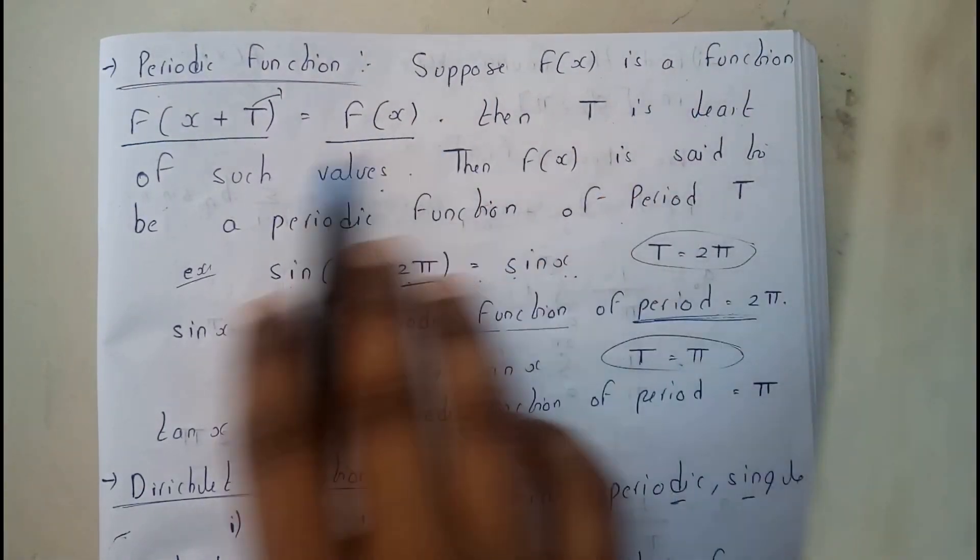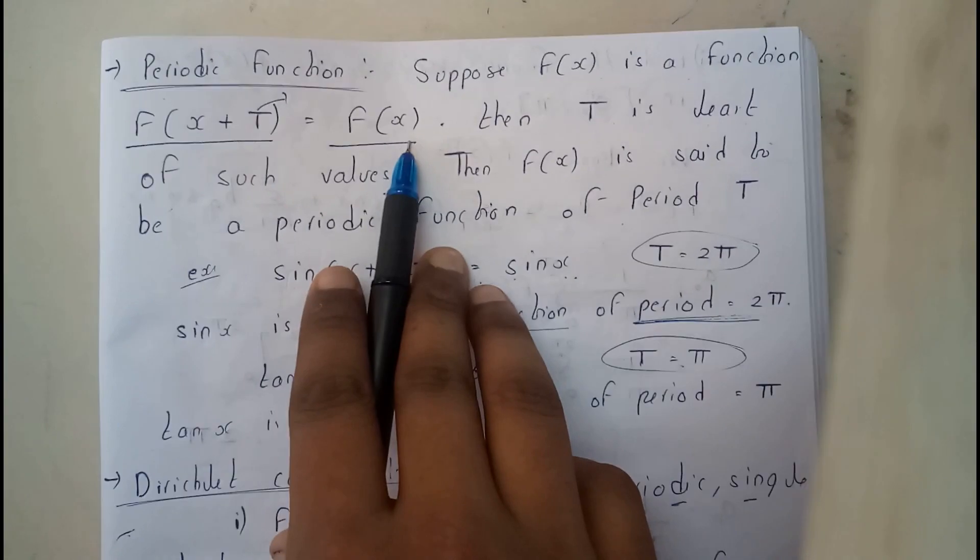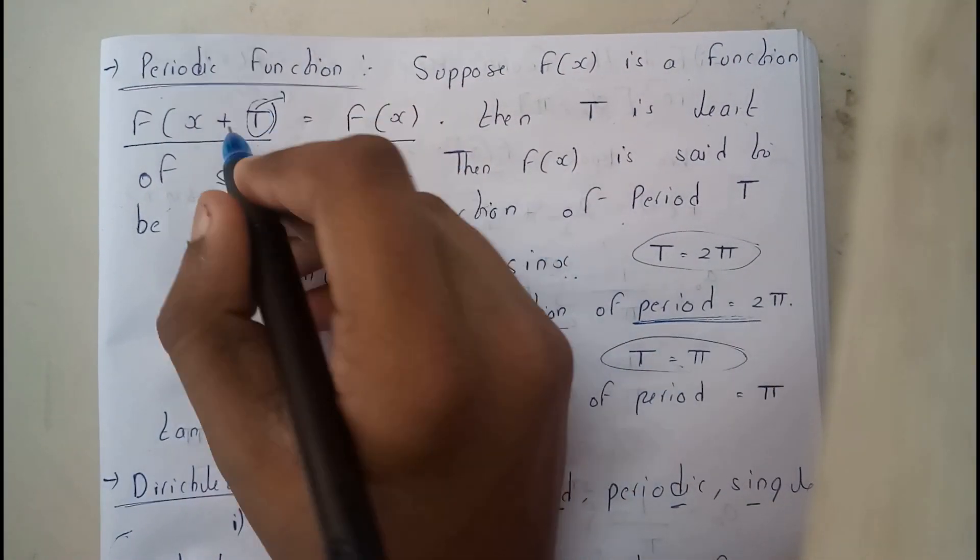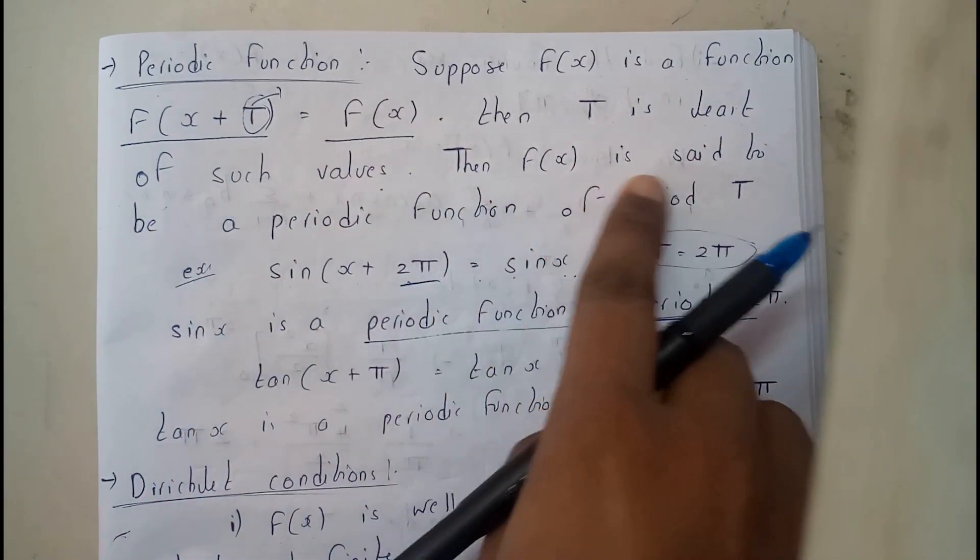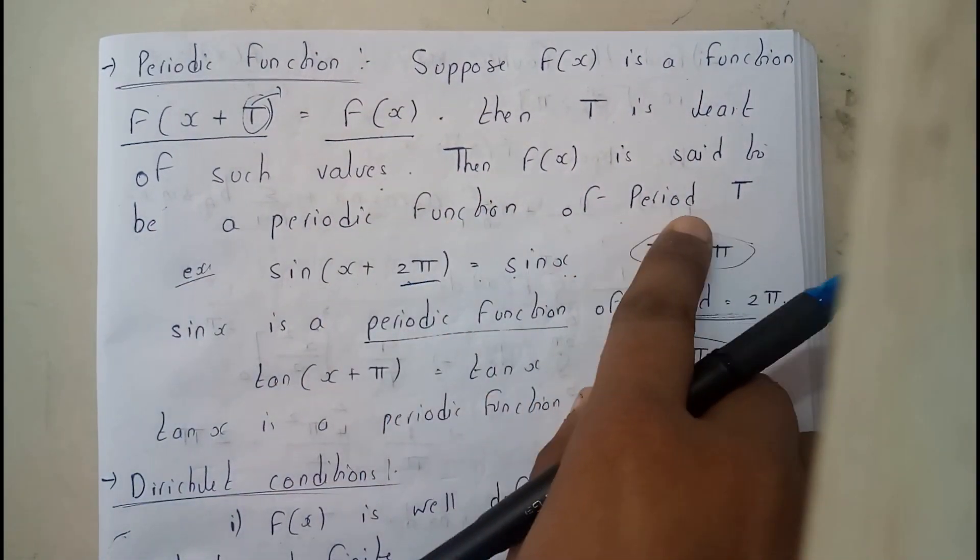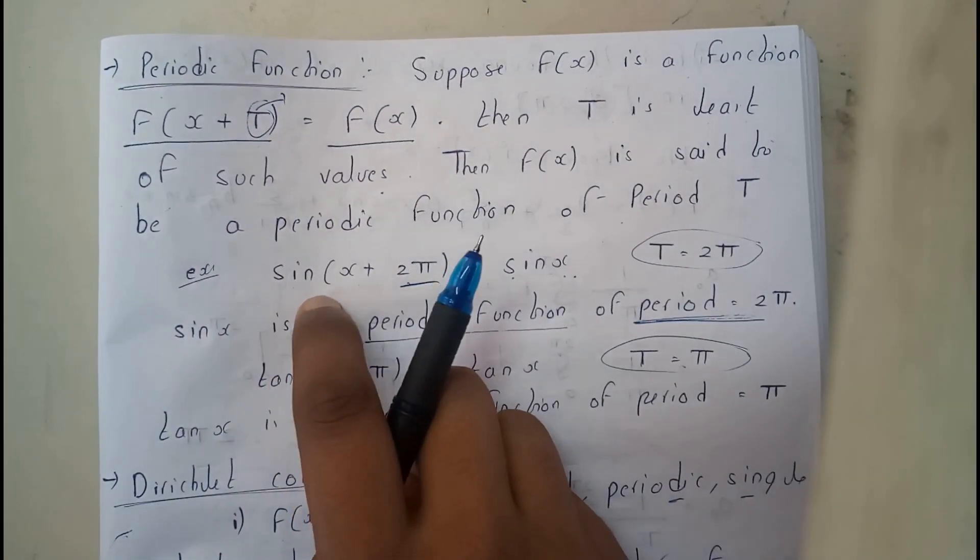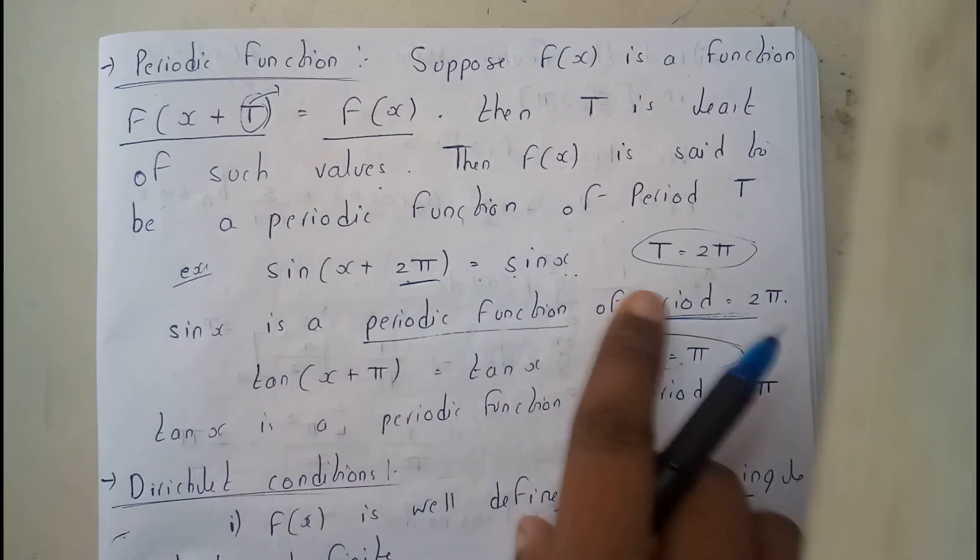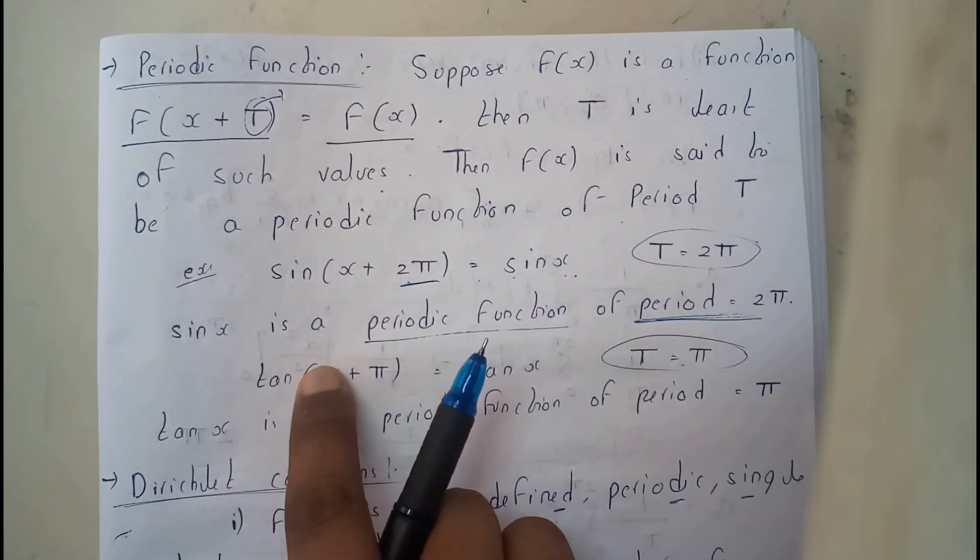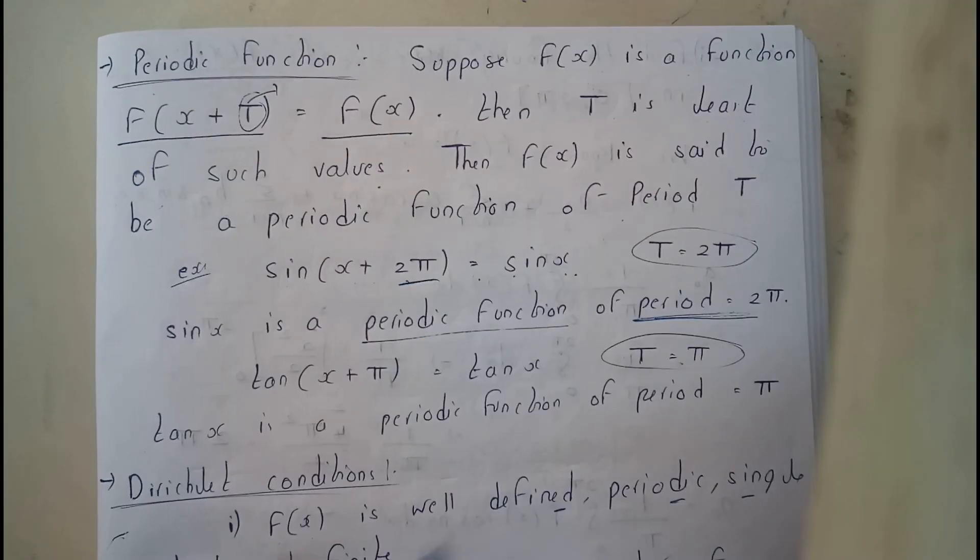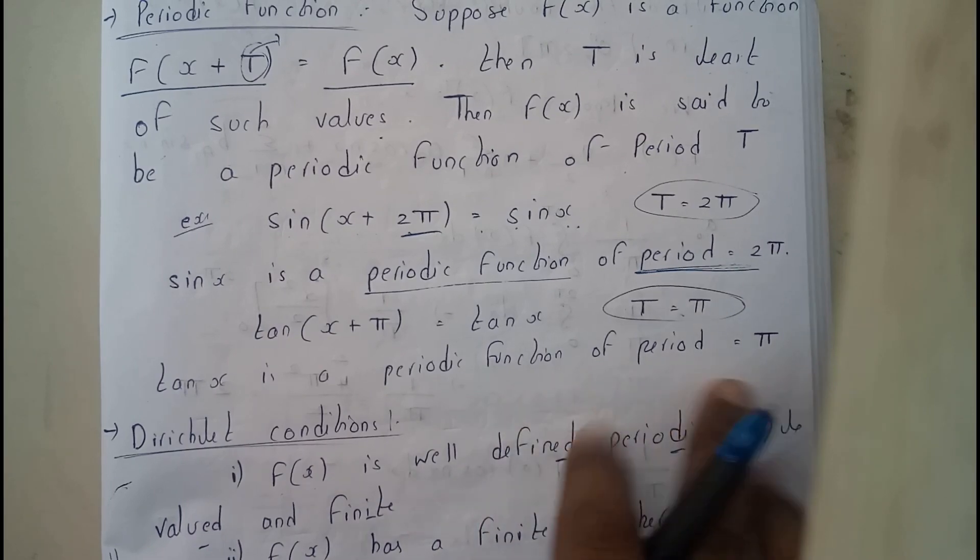Now let us learn about periodic function. Suppose a function f(x+T) = f(x), this T will be the period. Then T is the least of such value. Then f(x) is said to be a periodic function of period T. For example, sin(x+2π) = sin(x), so sin(x) is a periodic function of period 2π. Similarly, for tan it's π.